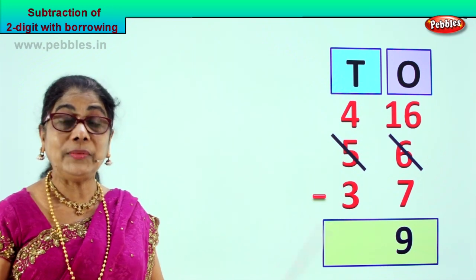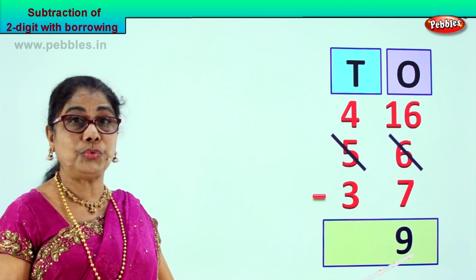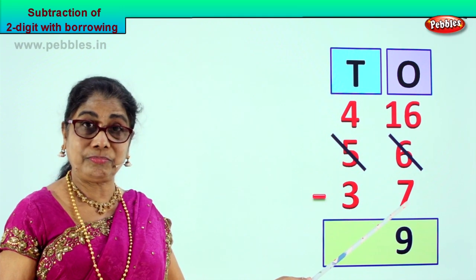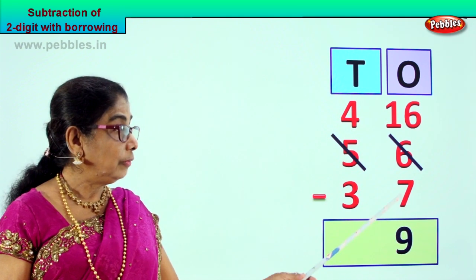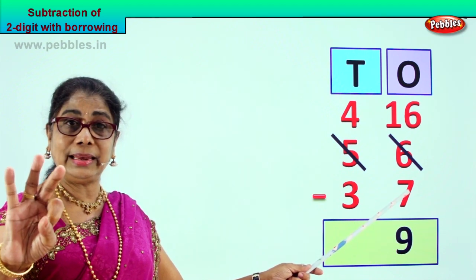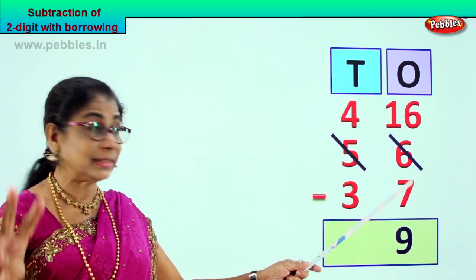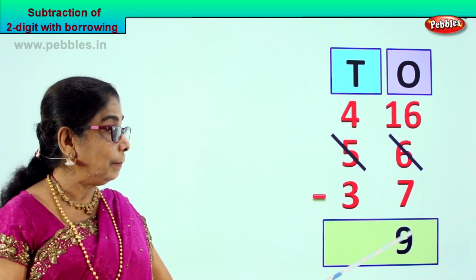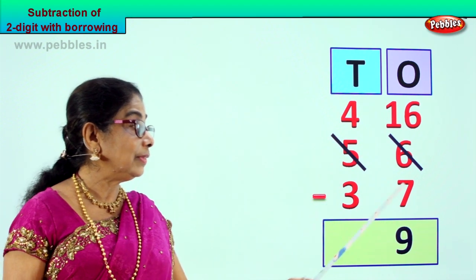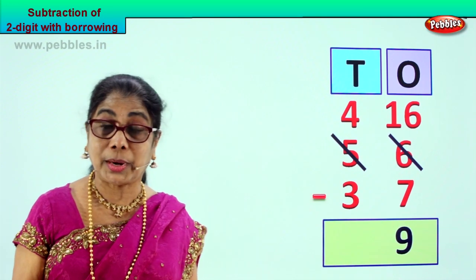We will take away, we will minus 7. 16 minus 7 gives you 9. Now we can check out: 7, 8, 9, 10, 11, 12, 13, 14, 15, 16 — that's 9. So 9 plus 7 is 16, and we know 16 take away 7 is 9.